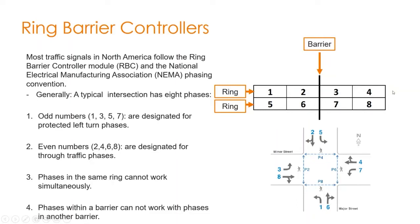Within each side of the barrier, any two phases in the same ring cannot work together. Any two phases that are not in the same ring can work together. That means phase one can work with phase five or phase six, but cannot work with phase two. Similarly, phase two cannot work with phase one but can work with phases five and six.